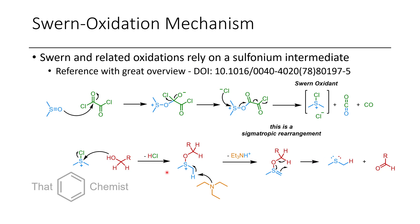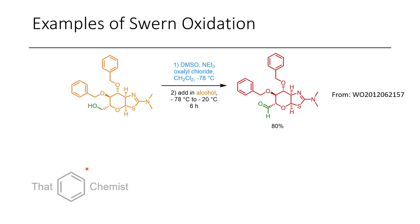I want to emphasize that the chlorosulfonium is a very unstable compound — if you heat it up, it can often lead to detonations. Even though there are chemical transformations where it can be converted to chloromethyl methyl sulfide, under most conditions it will simply explode, and I have had negative personal experiences with this. Do not try to isolate chlorosulfoniums.